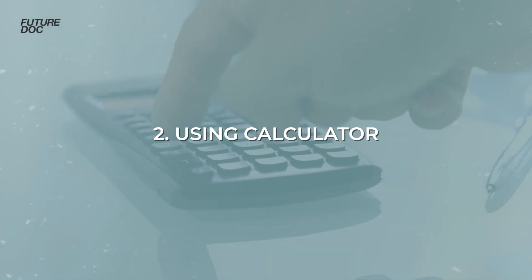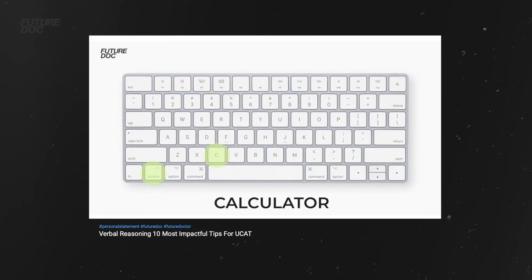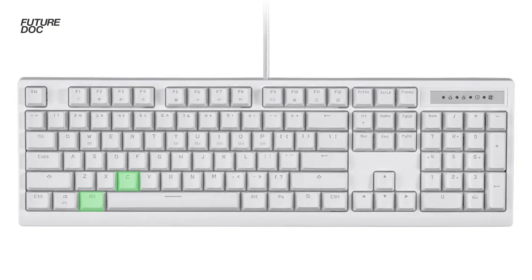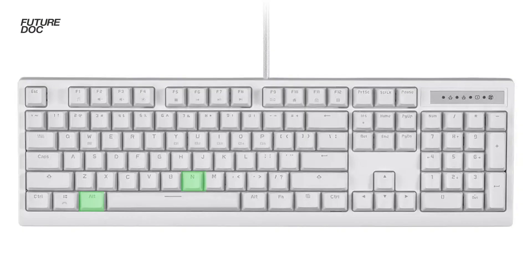Tip number two is around using the calculator. We're trying to eliminate calculator use as much as possible, but when you do need it, make sure you're efficient. One important thing is learning the keyboard shortcuts. It's Alt+C for the calculator — not Command+C as I mistakenly said in the verbal reasoning video. Alt+N goes to the next question, Alt+F to flag. Also, make sure to turn num lock on so you can use the keypad to type in numbers.